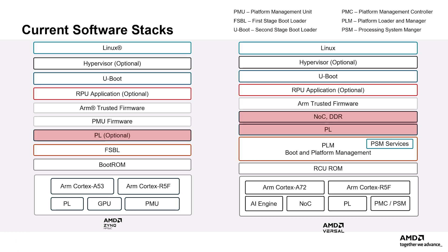If the PL configuration is executed at a later stage, it can affect the DDR configuration and, consequently, the system software running on the DDR. The time consumption by NOC, DDR, and PL configurations can make the boot process slower. To bring the Versal flow more in line with the MPSoC process, AMD has introduced a new approach known as Segmented Configuration starting from the 2024.2 release.